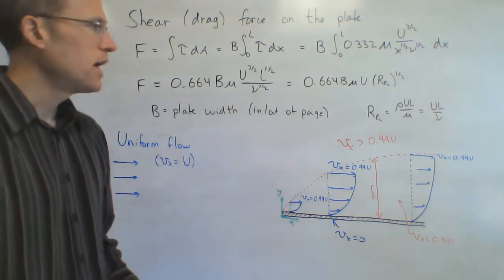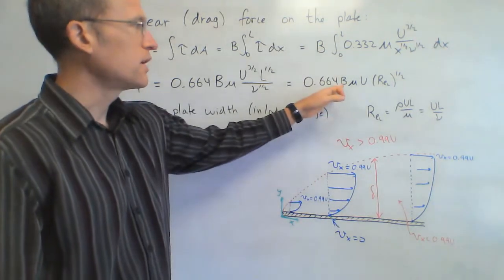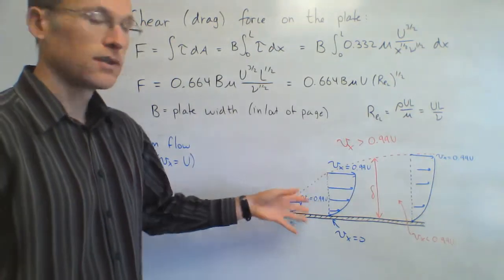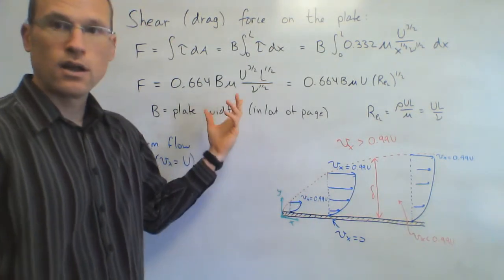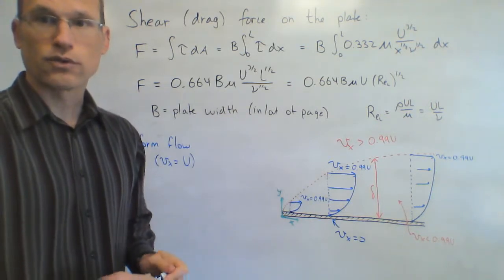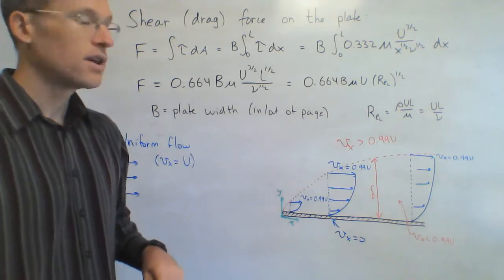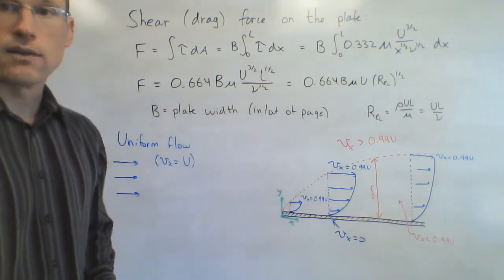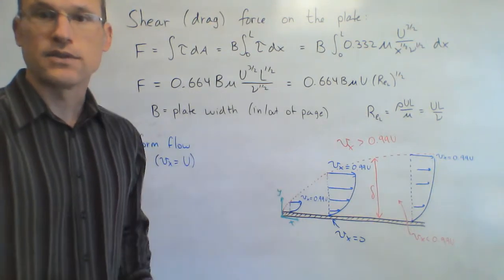As you can see from this equation, if I have a bigger plate — bigger value of B or bigger value of L — that's going to increase the force, which makes sense. If I have a bigger viscosity, remember viscosity is like fluid friction, so that's more frictional force and again a bigger drag force. If I have a bigger velocity, again I'm going to have a bigger drag force. All of this makes sense physically and intuitively.